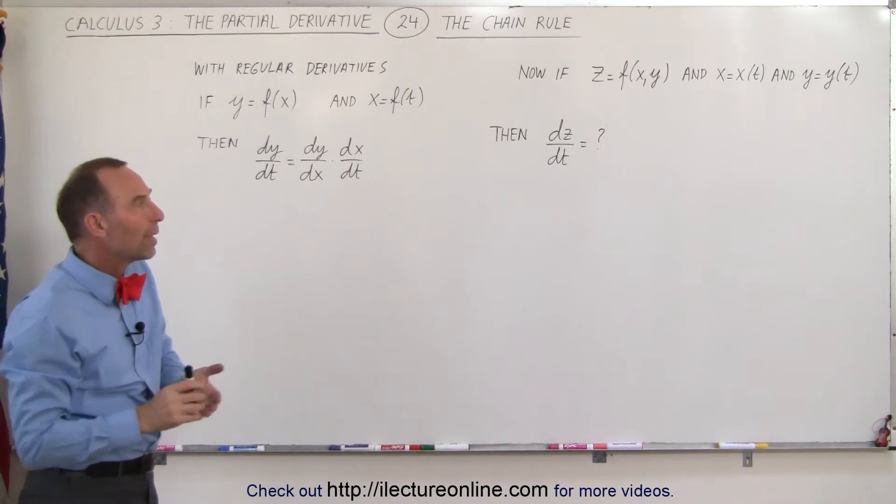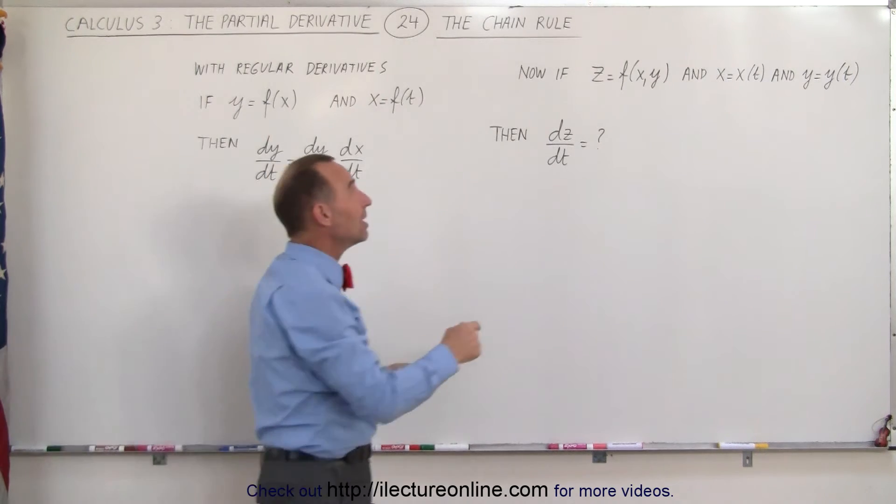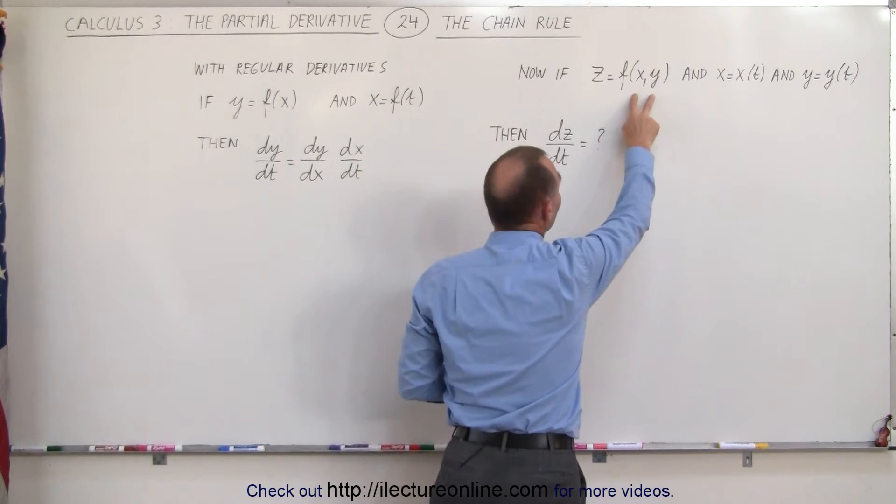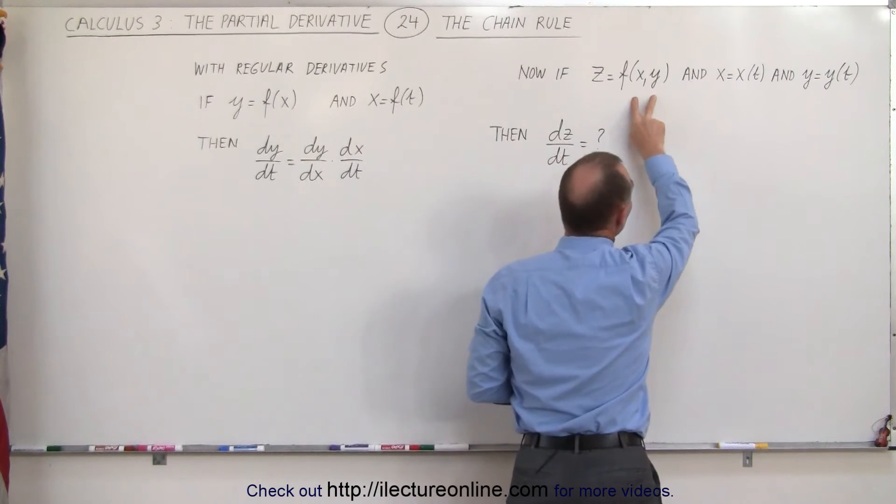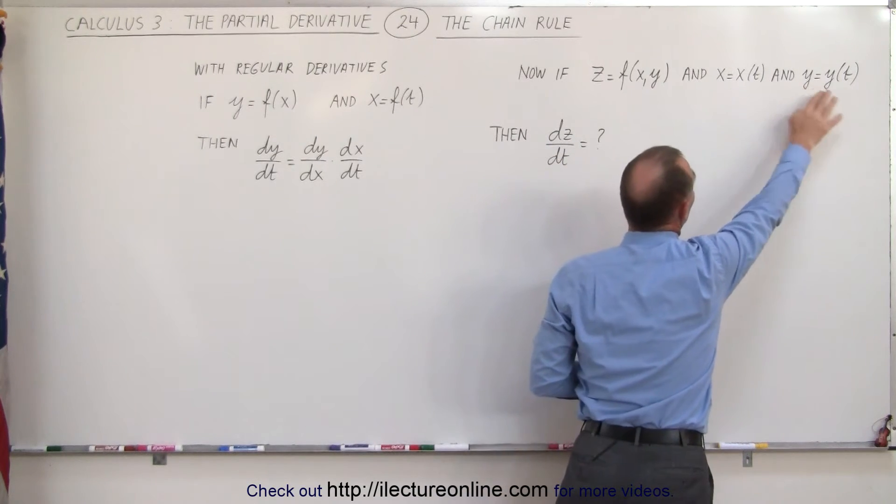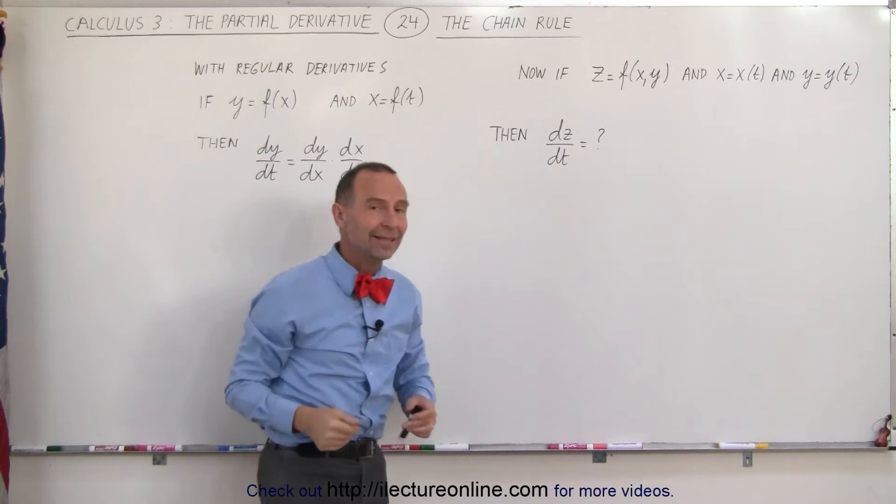But how do we do that when we have a situation where a function like z is a function of two variables x and y, and each of the two variables are functions of the same variable t? How do we find dz/dt?